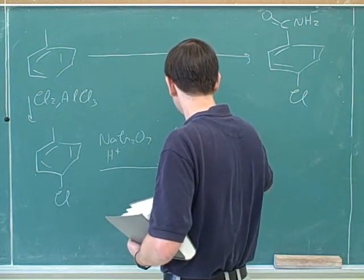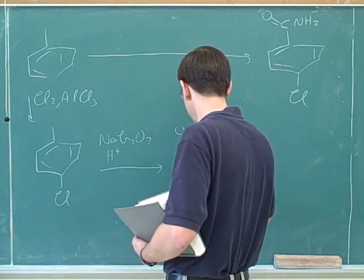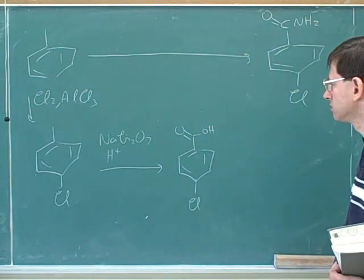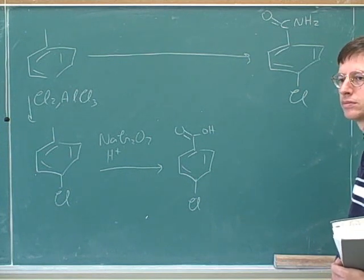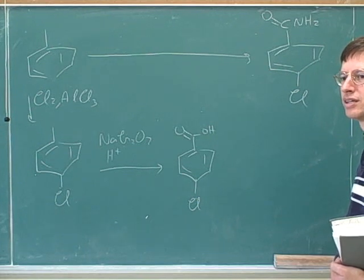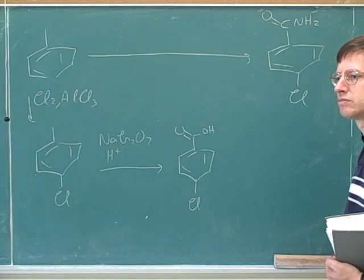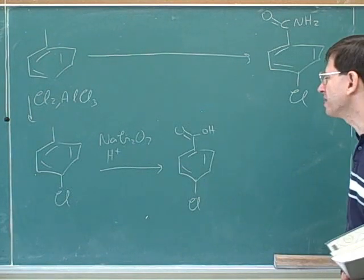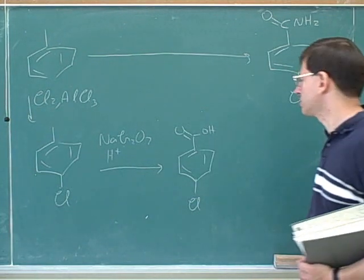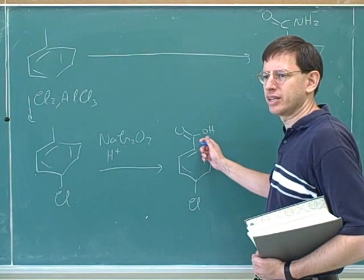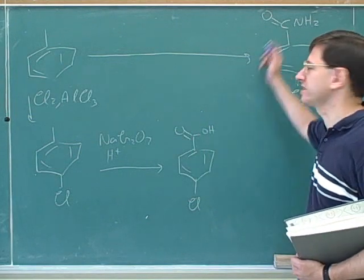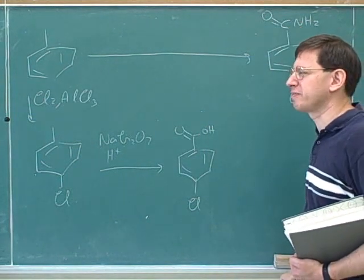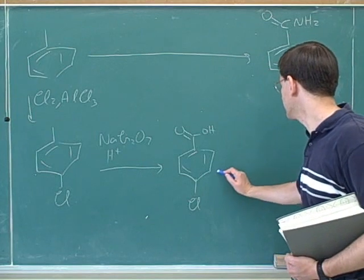A student asks: many times we've said that you first have to make it into SOCl₂ to put a Cl, and then add the NH₃, but sometimes they don't. So when is it right to do it? Probably the best thing to do is to use thionyl chloride here. It is possible to go straight from a carboxyl group to an amide, but it's probably just not as good a reaction. Let's see both ways.